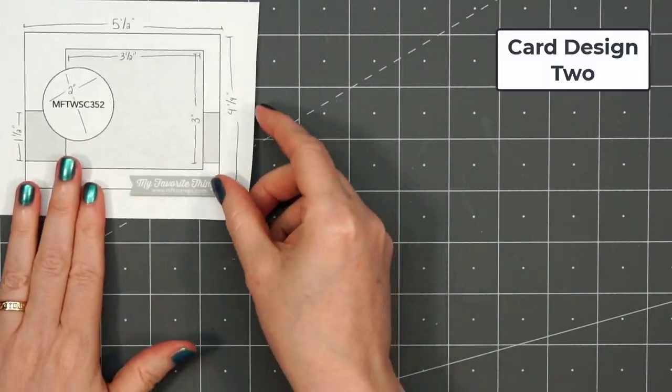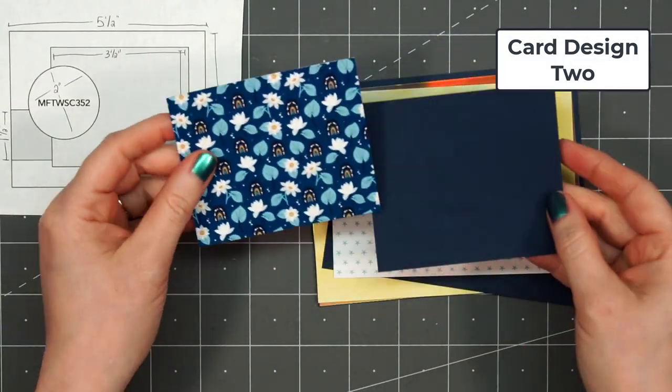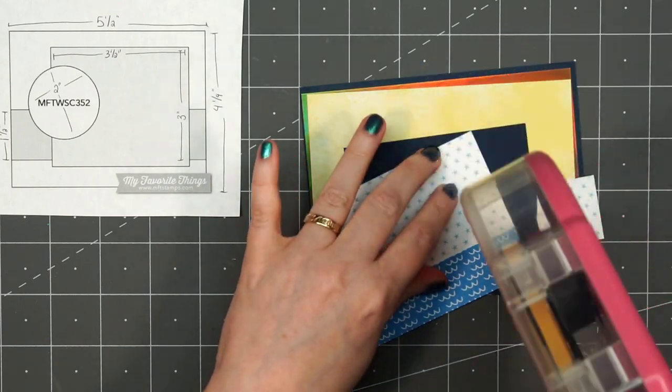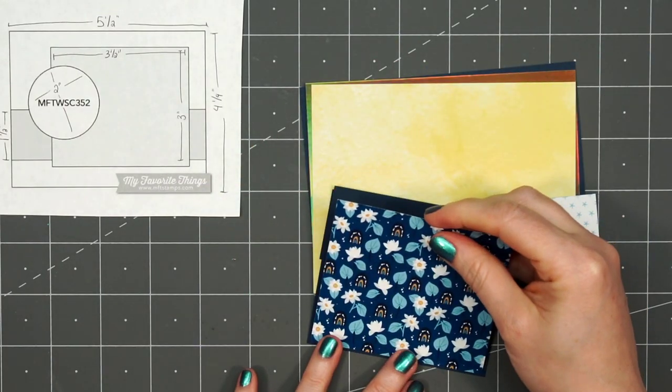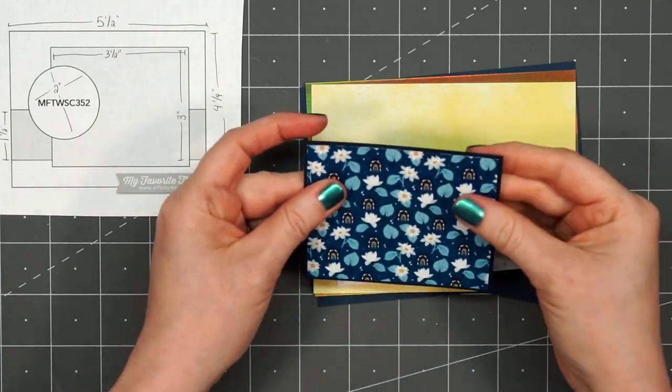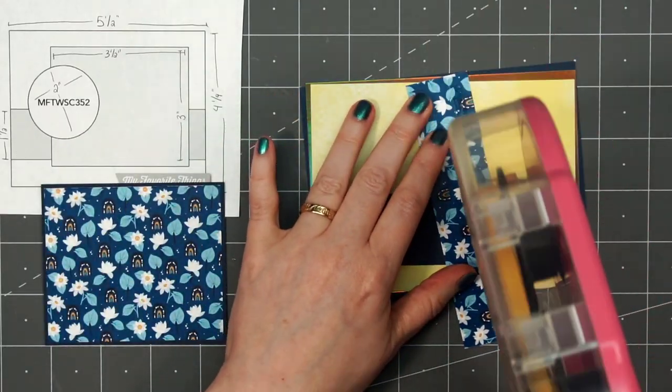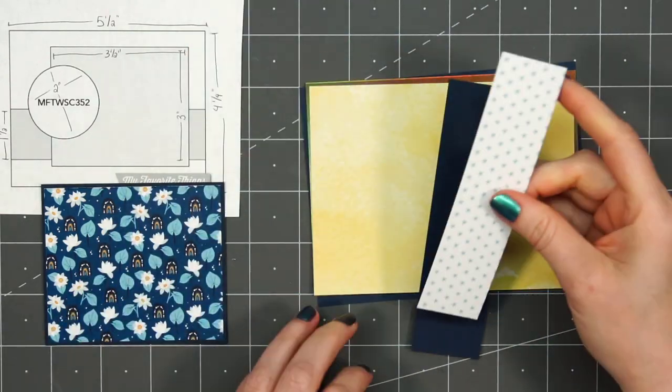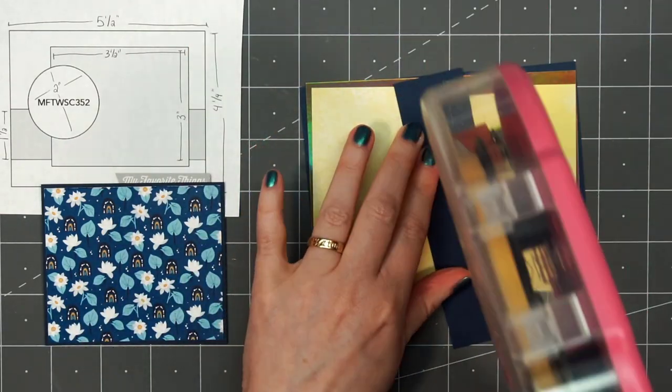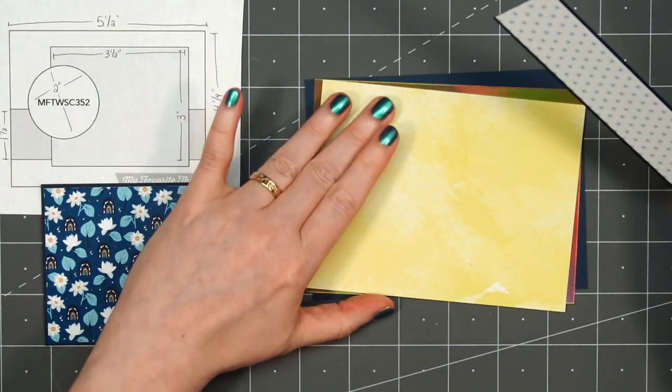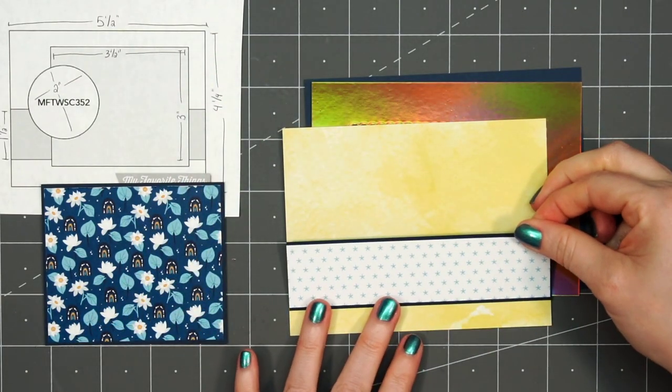For card design number two, the card sketch is from MFT. It's number 352. For the very background of the card, I'm using some of the yellow watercolor whimsy paper. Then I have two patterned papers. One has lots of little flowers, rainbow and fish, and also this strip of white patterned paper with the tiny blue stars. I'll layer those on some dark blue cardstock.